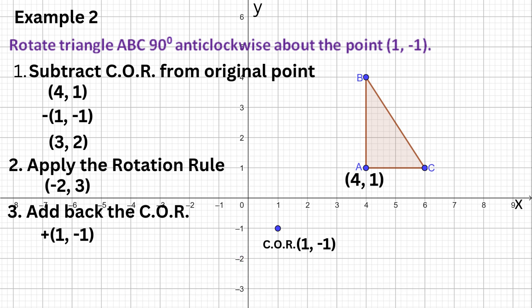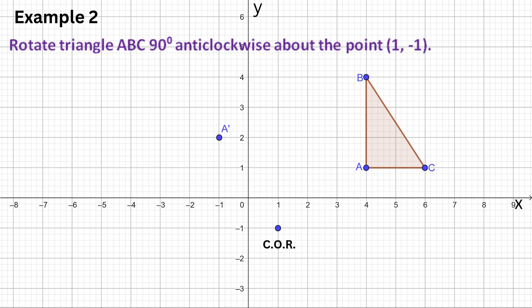The final step is to add back the center of the rotation. So −2 + 1 = −1, and 3 + (−1) = 2. So the newly rotated image point of A is (−1, 2).